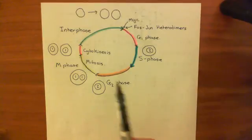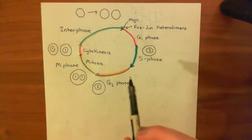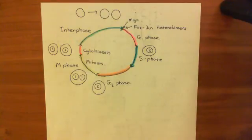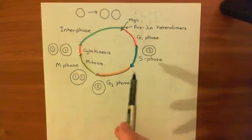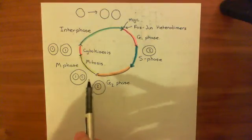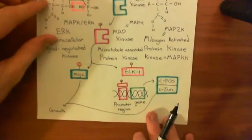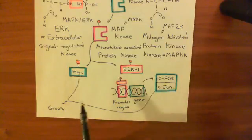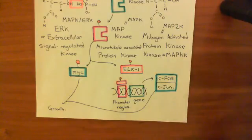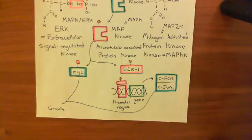In G2 phase, you're not only producing more proteins needed to become two cells, but also producing the protein machinery needed to split the nucleus and the cell. Basically, the result of this entire MAP kinase ERK pathway was that MYC and c-FOS / c-jun heterodimers move the cell from interphase — the quiescent phase — to G1 phase, and you then go through the process of dividing. This is one of the pathways by which HER2, binding to the epidermal growth factor receptor, triggers cellular division.